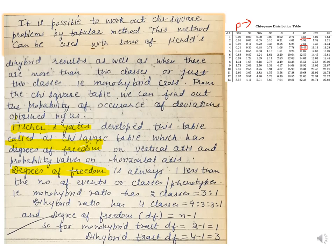It is possible to work out a chi-square problem by a tabular method, and this can be done with some of Mendel's dihybrid as well as monohybrid ratios. Fisher and Yates developed a table called the chi-square table, which has degrees of freedom on one axis and probability values on the other axis. Let us discuss this table and some more related terms.